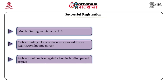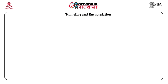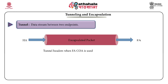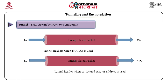The next phase is tunneling and encapsulation. The mobile node has now achieved a care of address and registered it with the home agent. A tunnel means establishment of a pipe — a data stream between two connected ends. Data is inserted from one end and retrieved from the other using a first-in, first-out method. When the mobile node uses a foreign agent care of address, the home agent is the entry point and the foreign agent is the endpoint. When using a co-located care of address, the home agent is the entry point and the mobile node itself is the endpoint. Tunneling is performed using encapsulation.